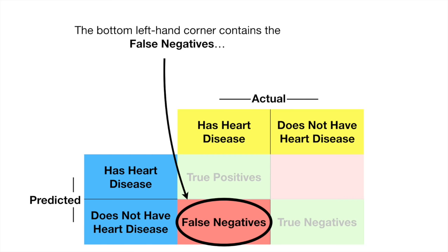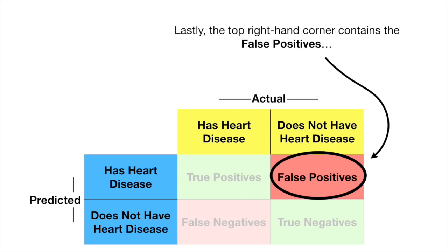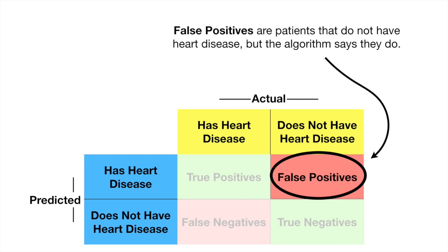The bottom left-hand corner contains false negatives. False negatives are when a patient has heart disease, but the algorithm said they didn't. Lastly, the top right-hand corner contains false positives. False positives are patients that do not have heart disease, but the algorithm says they do.